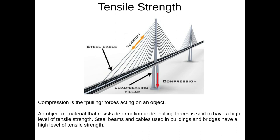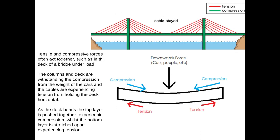Tension is pulling forces and compression is pushing forces. This diagram explains how tension and compression often act together. In a bridge, the steel cables are under tension, holding up the deck, which is under compression as it is being pushed downwards.